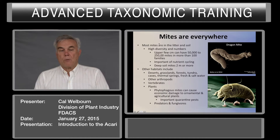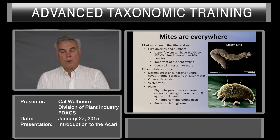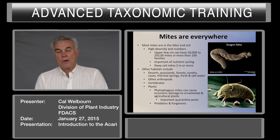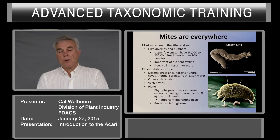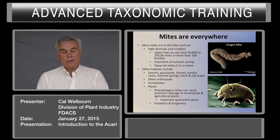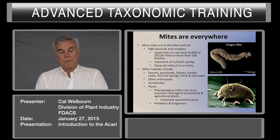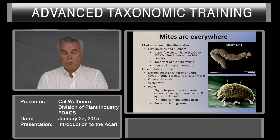Mites are everywhere. Most mites are in litter and soil, with high diversity in numbers. The upper few centimeters of soil and litter can have 50,000 to 250,000 mites in more than 100 families. These mites are very important in nutrient cycling in the soil. Some mites live in deep soils, up to two meters or more. Plants can serve as hosts for phytophagous mites that can do economic damage to ornamentals and agricultural crops, and some are important quarantine pests.